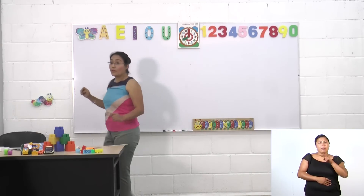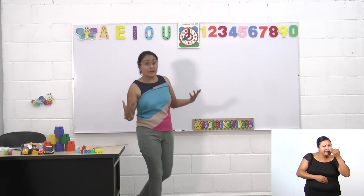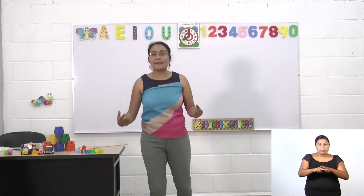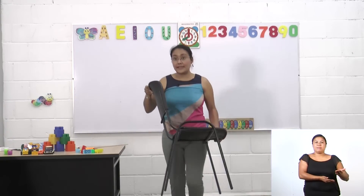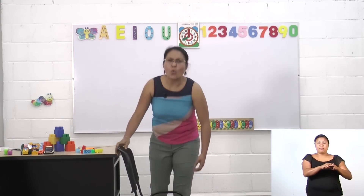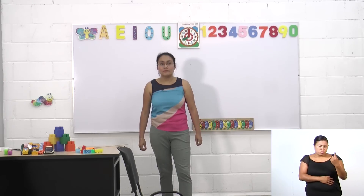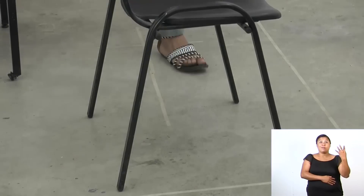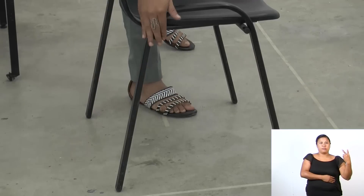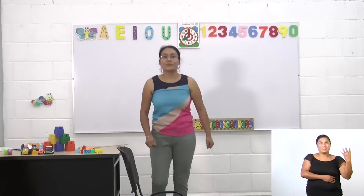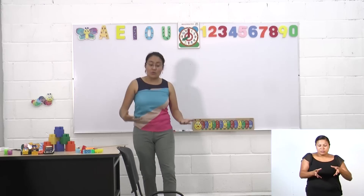También podemos encontrar los números en flores, en árboles, en sillas, precisamente como la silla que tenemos acá en el salón. Esta silla, ¿cuántas patas tiene? Tiene cuatro. Contémoslas juntos: uno, dos, tres, cuatro. Tenemos cuatro patas.